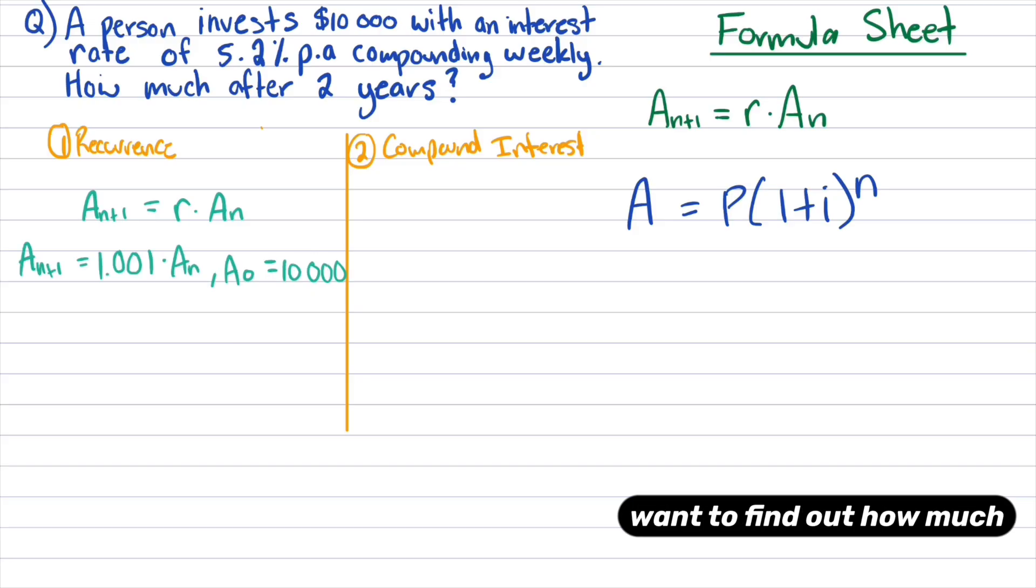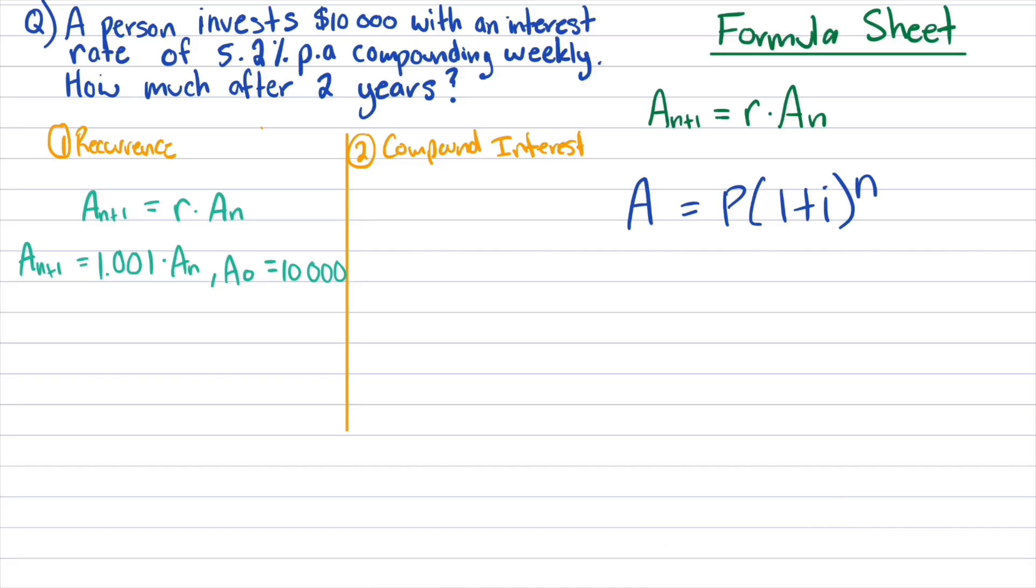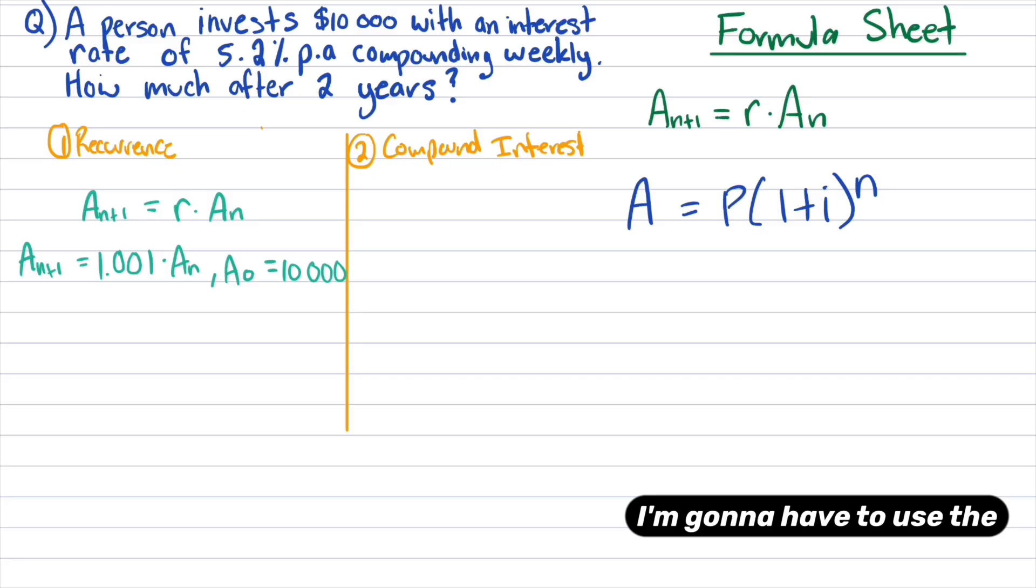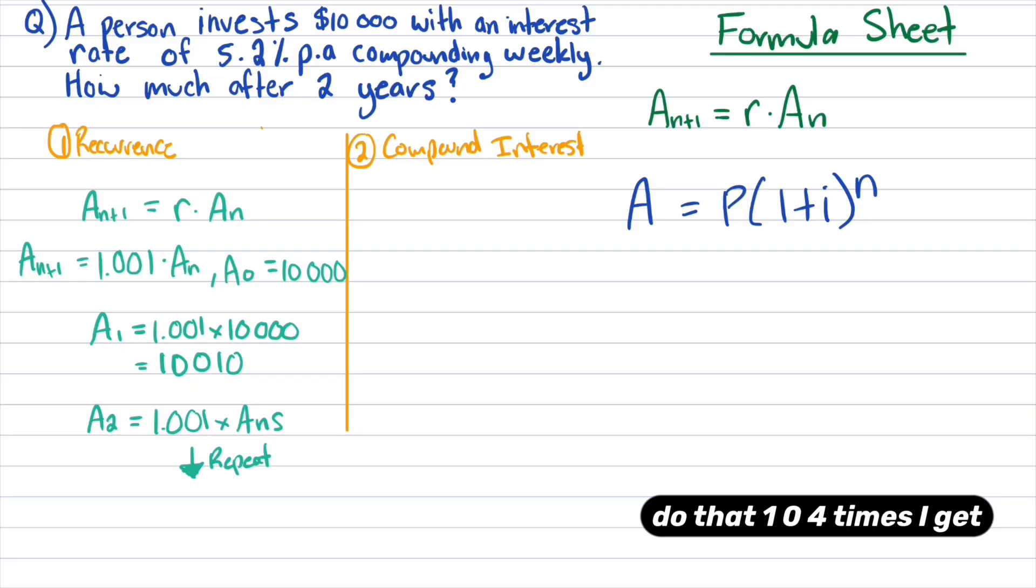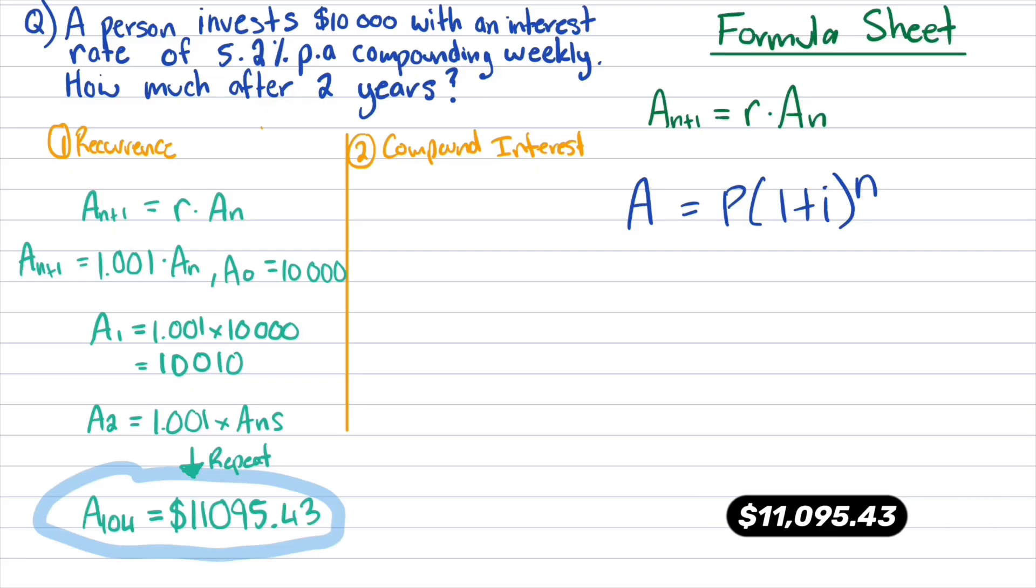So if I want to find out how much there's going to be after two years, well, because we're dealing with weekly here, I'm going to have to do 52 times 2, so that's 104. So I'm going to have to use the recurrence relation trick on my calculator 104 times. So I would repeat this for A1, A2, I'd continue repeating it. And when I do repeat that and do that 104 times, I get that number there, $11,095.43. So that's using the recurrence relation.